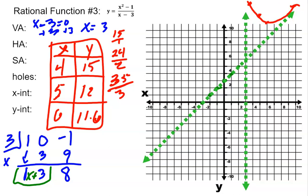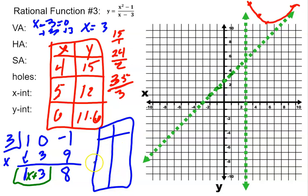Now for the other side of the vertical asymptote, I'll draw another table of values and do 3 points. If x equals 2: 2 squared is 4, minus 1 is 3, and the denominator is 2 minus 3 equals negative 1, so 3 divided by negative 1 is negative 3. I have a point at (2, negative 3).